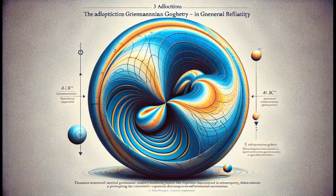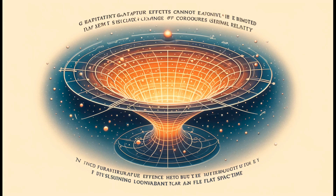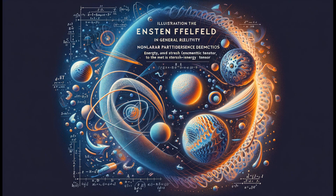This understanding extends to the fact that gravitational effects cannot be eliminated by a simple change of coordinates. Instead, the curvature of spacetime must be taken into account, fundamentally changing how we perceive and describe gravitational interactions. The adoption of Riemannian geometry in general relativity allows for a more accurate and comprehensive description of gravitational phenomena that accommodates both local approximations and global curvature effects.